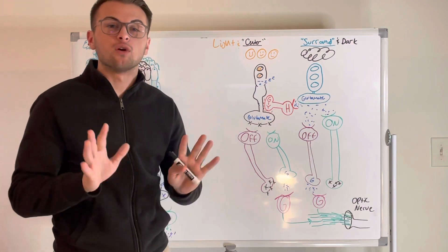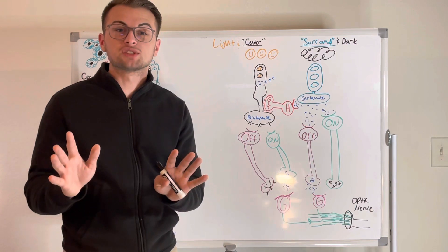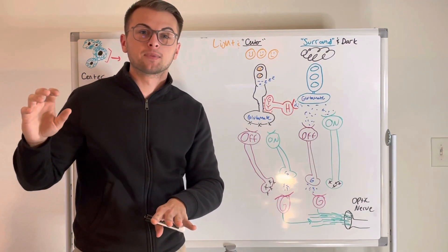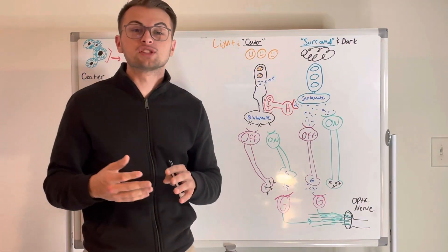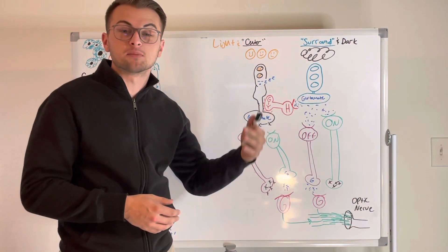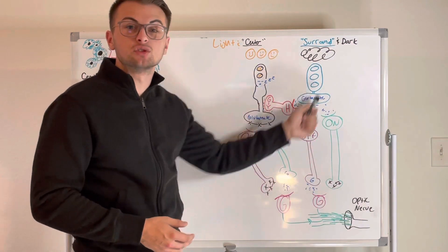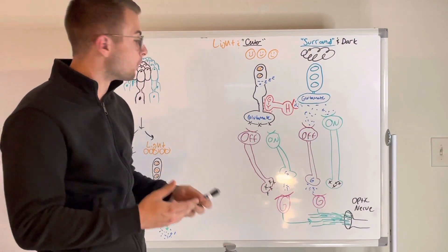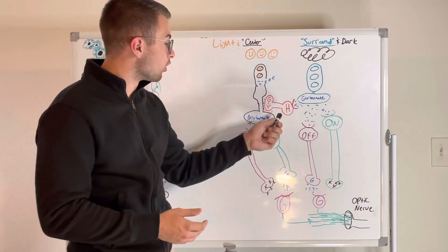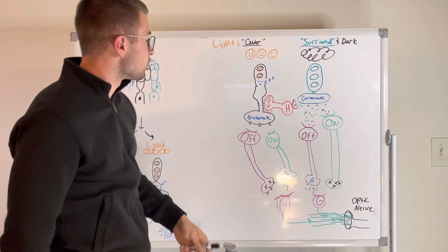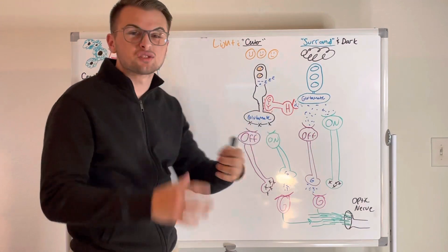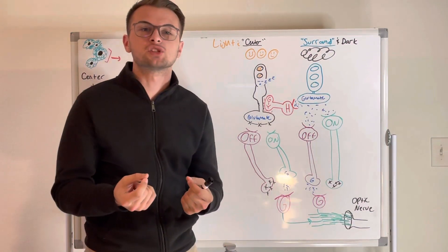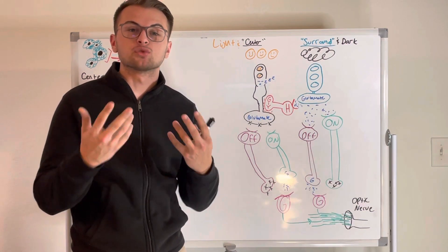Simply put, horizontal cells augment and make more precise the effects of photoreceptors. If a photoreceptor is in the dark, it releases glutamate and the horizontal cell does nothing to stop it — the floodgates are open. Conversely, if the photoreceptor is in the light, it already releases less glutamate, and the horizontal cell connected to the dark surround further inhibits it so even less glutamate is released. The result is that the ganglion cell receives very precise information about the location of light in the center and dark in the surround, made more precise by the horizontal cell.